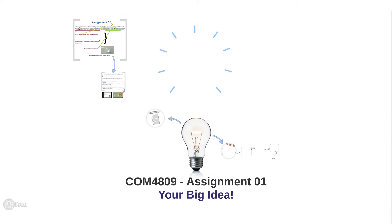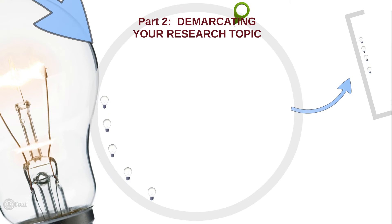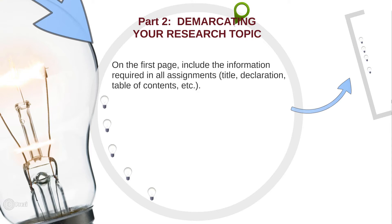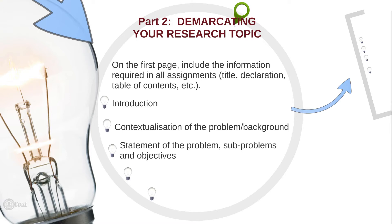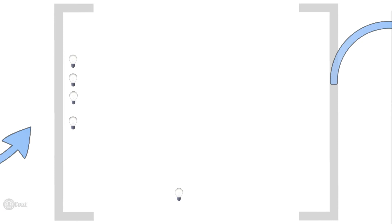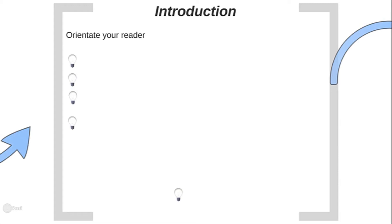Now let's look at part one of your assignment — the big idea part — focusing on the demarcating of your research topic. On the first page, include the usual required information: a title, a declaration, table of contents, etc. For part one, the demarcation of your topic, you need an introduction, contextualization of the problem and background of your study, statements of the problem with sub-problems and objectives, a conclusion, and a list of sources consulted. These five aspects all need to feature in this part.